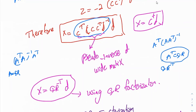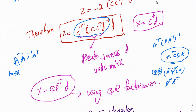If you let A transpose equal QR, the pseudo-inverse becomes Q times R negative transpose. Substituting: A equals R transpose Q transpose, A transpose equals QR. Q Q transpose is orthogonal, so it simplifies. You get R inverse times R negative transpose, which cancel, giving Q times R negative transpose. So X in QR factorization is Q times R negative transpose times D.